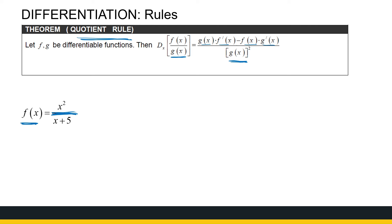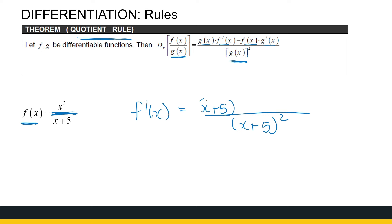Here's a way to remember the quotient rule: start at the bottom — write that denominator squared. Then rewrite the denominator, x plus 5. Now the derivative of the top is 2x, minus — note the quotient rule has a minus where the product rule has a plus, so order is important — minus the numerator times the derivative of the denominator. The derivative of (x plus 5) is just 1. That's the quotient rule applied.